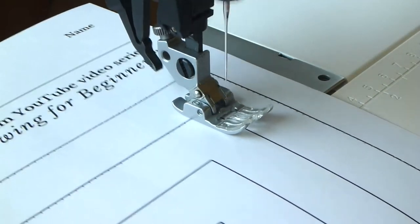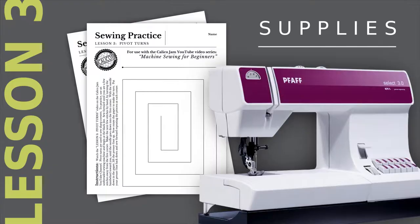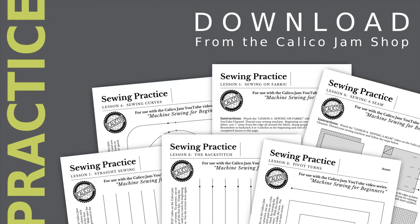To practice this you will need an unthreaded sewing machine and several copies of the lesson three paper practice sheet. The practice sheets for this series can be purchased and downloaded online from the Calico Jam shop or you can make your own. For a link to the shop please see the video description.